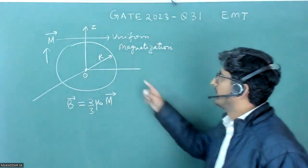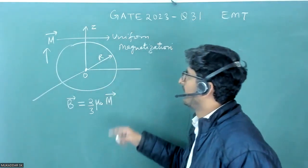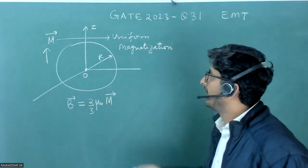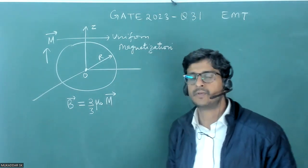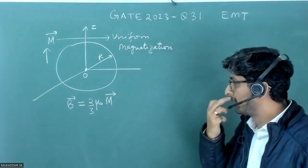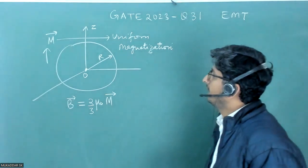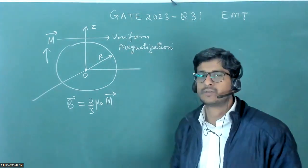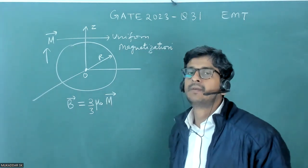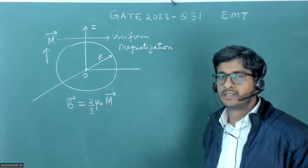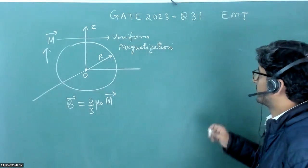A sphere is given which is a magnetized sphere and the magnetization is uniform. So capital M is uniform which will not depend on X, Y, Z or R theta phi. They have asked few questions on this. So it is a multiple select question, so we have to be very conscious about checking each and every option.